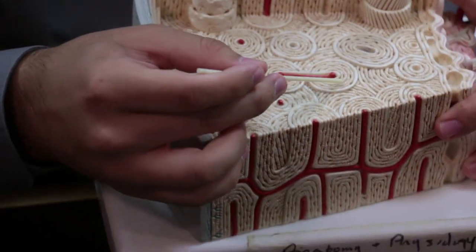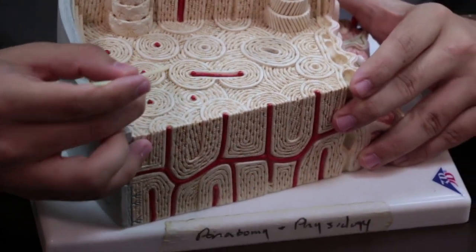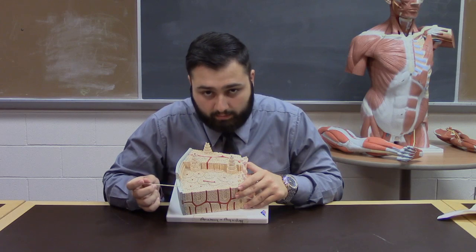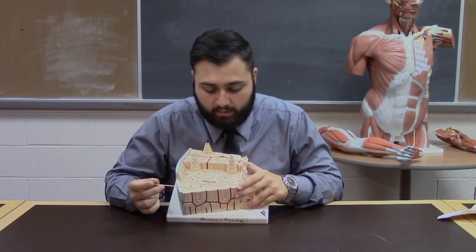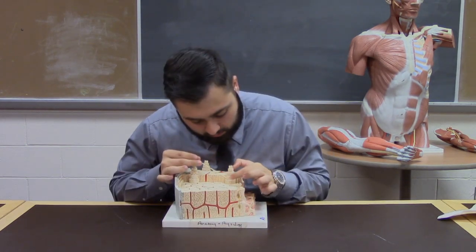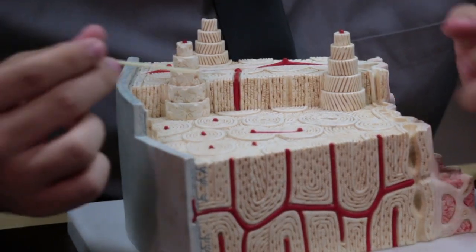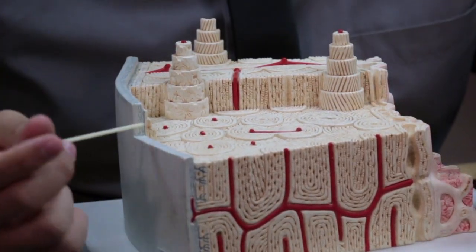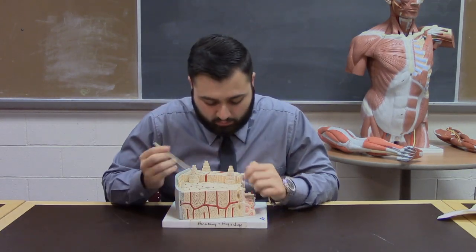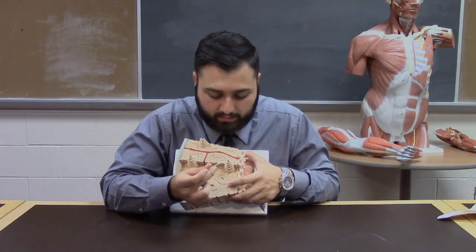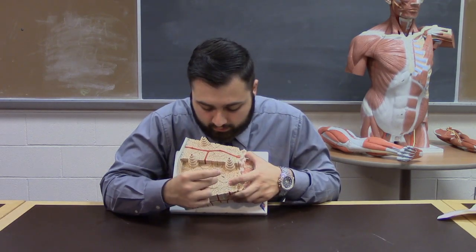Then you have all these circles. All these circles are called osteons. They're made up of concentric lamella. Concentric lamella: one, two, three, four, five. This one has five. Concentric lamella make up the osteons. Circumferential lamella goes around the whole bone. So, you have the osteons made up of concentric lamella inside that red part — the central canal.